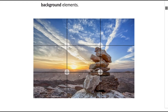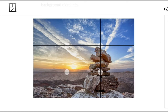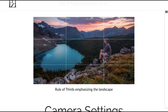This is a perfect example of using the rule of thirds. In this photo we're emphasizing the sky by putting the horizon on the bottom third line — two-thirds of the photo is going to be sky. We're also using the idea of having a background which is the sky, a middle ground which is the mountains, and the foreground element which is the stack of rocks.